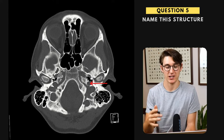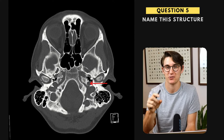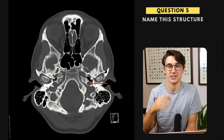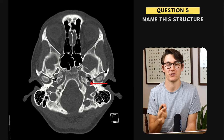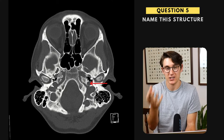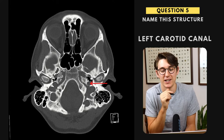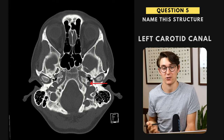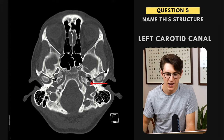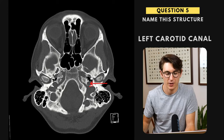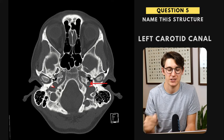Question number five, we're at the base of the brain with lots of foramina, and this is the left carotid canal, with our carotid artery coming up through it. The easiest way to remember this is that posterior to the carotid canal is the jugular spine — it's quite a characteristic spike, and if you see that, you know the carotid is lying anterior to it.